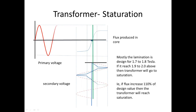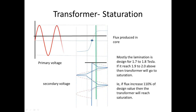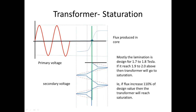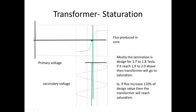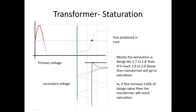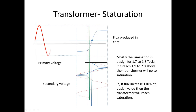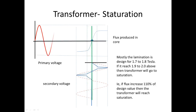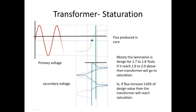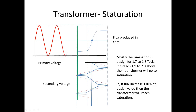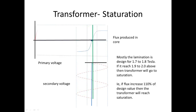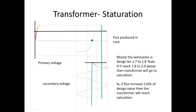Most transformer laminations are designed to operate at 1.7 to 1.8 Tesla. If the flux density reaches 1.9 to 2.0 Tesla and above, the transformer will go into saturation.